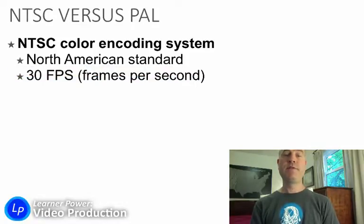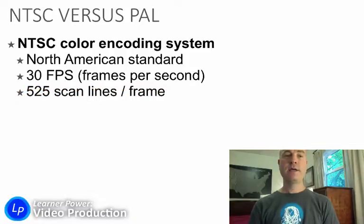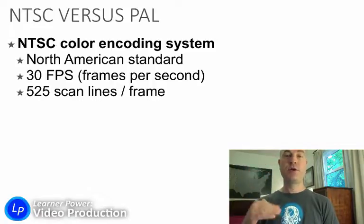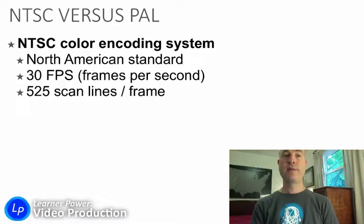NTSC runs at 30 frames per second, and there happened to be 525 scan lines in each frame. By scan lines, I mean the horizontal lines of the picture. So NTSC television: 525 scan lines at 30 frames per second.